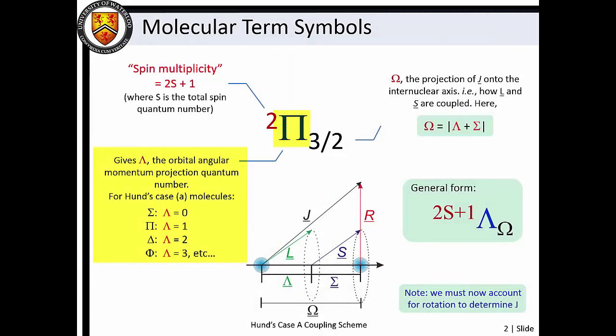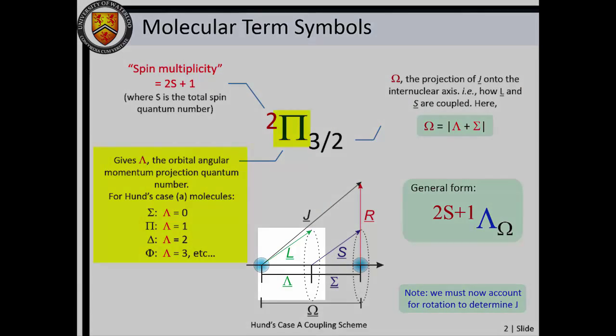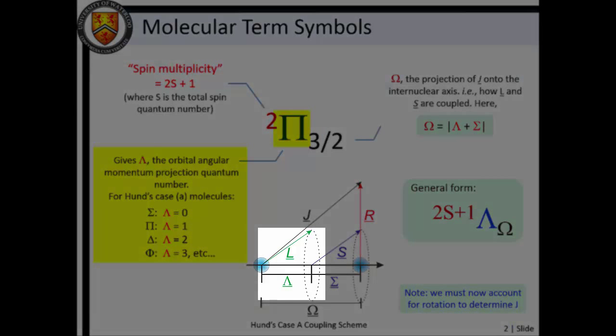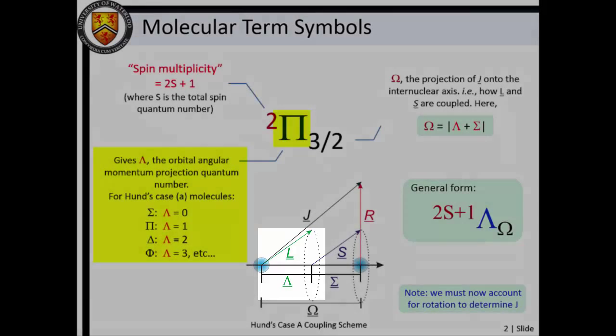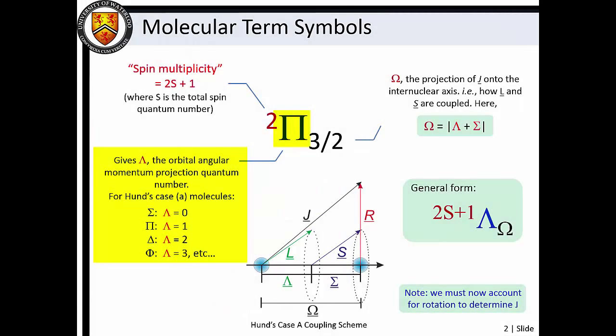The central term symbolizes lambda, which is the quantum number describing the projection of the total orbital angular momentum onto the internuclear axis. For lambda equal to 0, 1, 2, and 3, we have sigma, pi, delta, and phi terms.